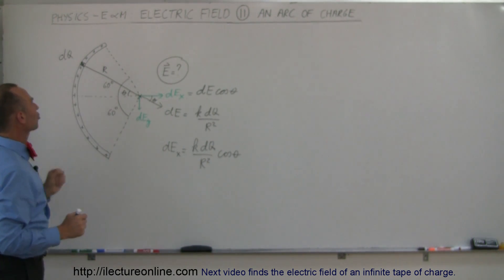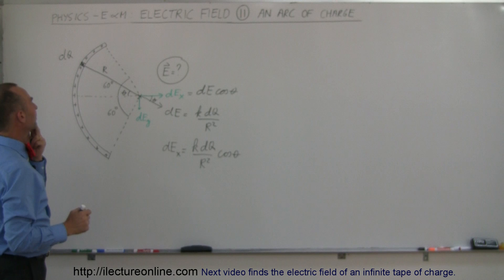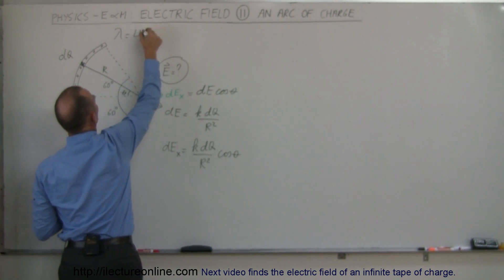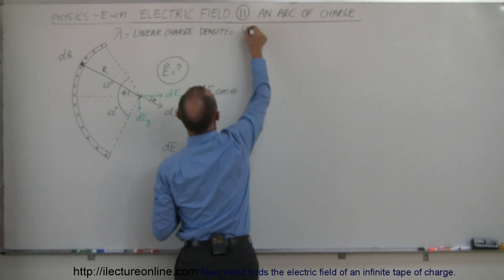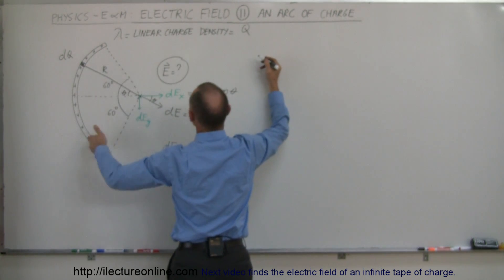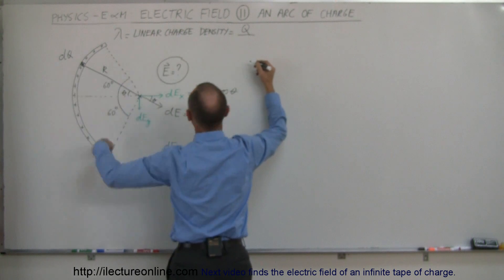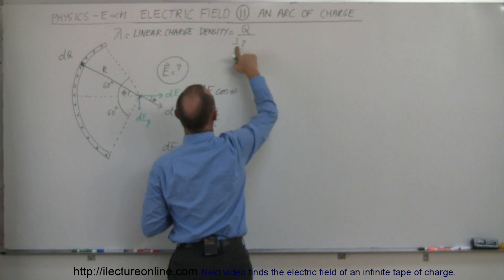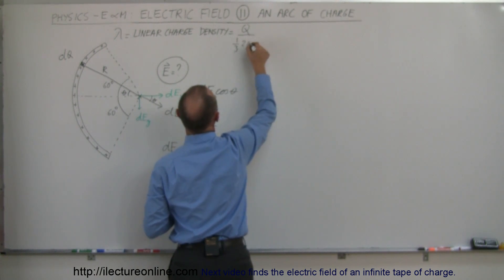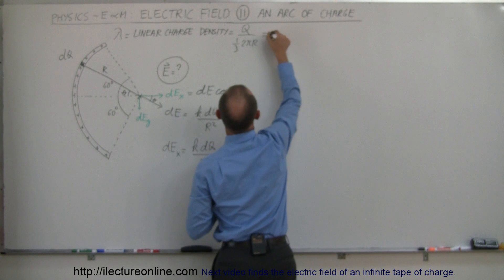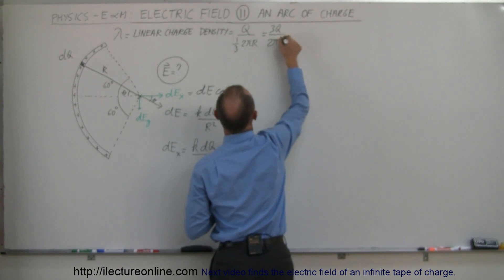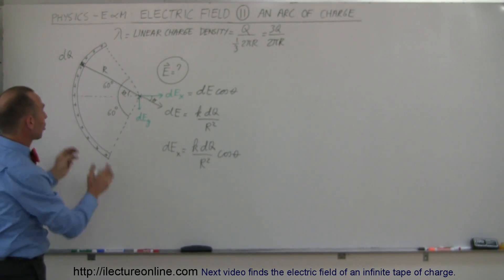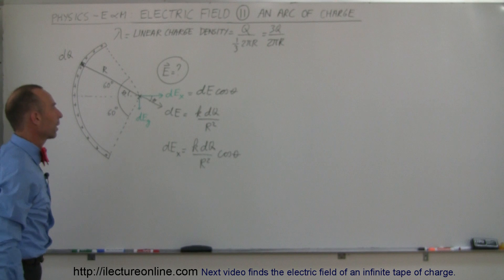How much charge is DQ? We have a linear charge density lambda, equal to the total charge placed on the arc divided by the length of the arc, which is one-third of the circumference. That's one-third times two pi times the radius, which gives us lambda equals 3Q divided by 2 pi R, assuming we place charge Q on this arc.